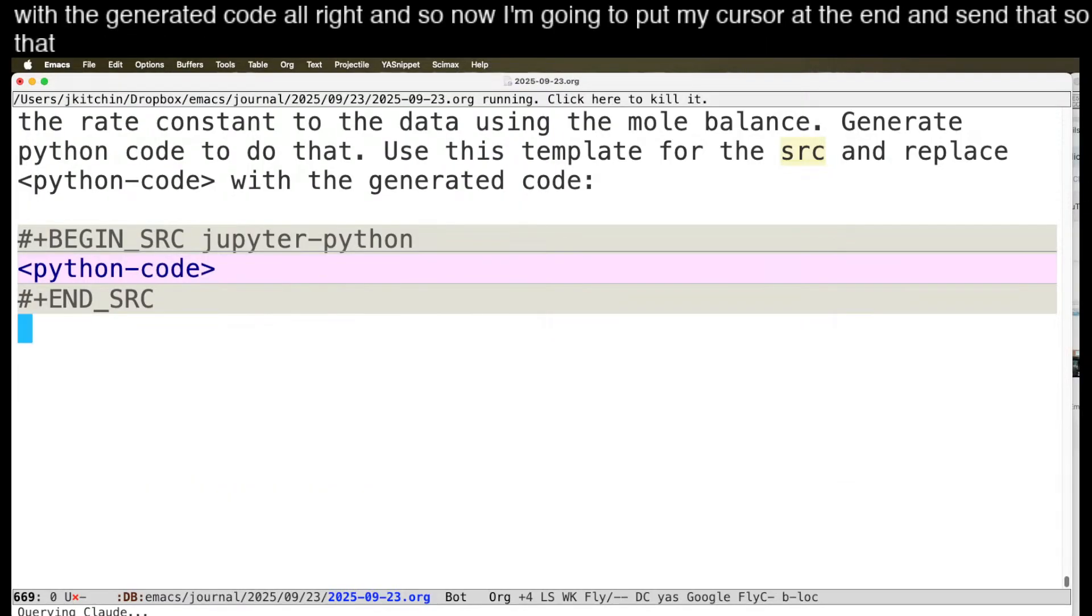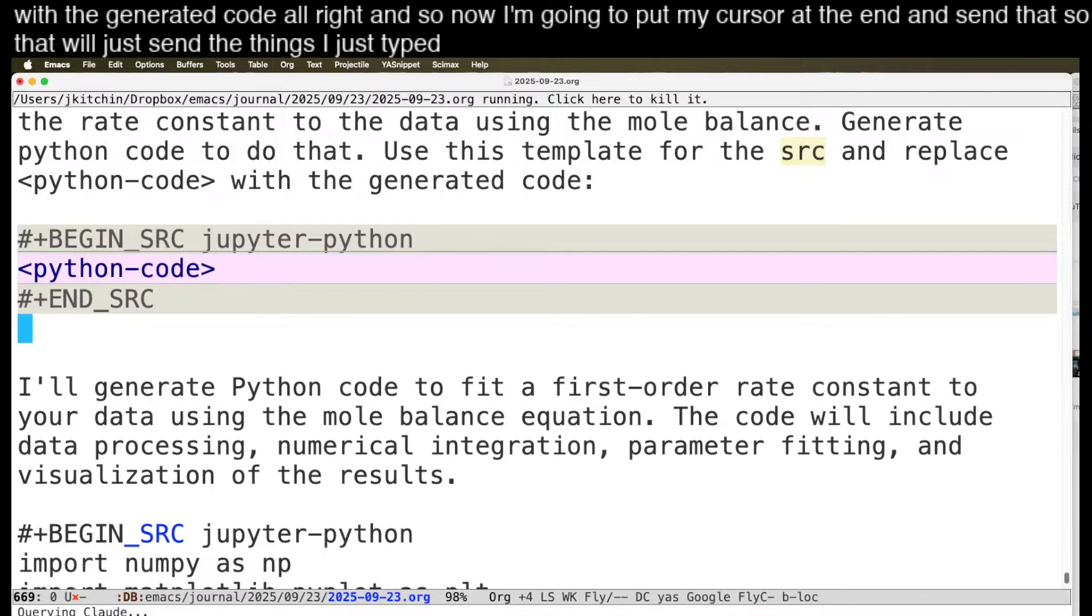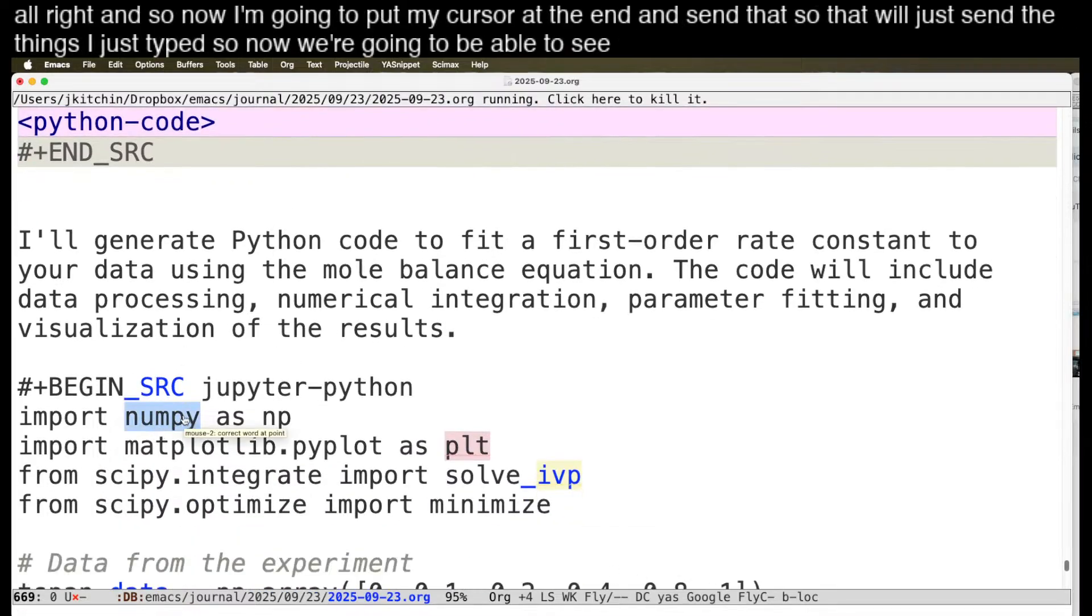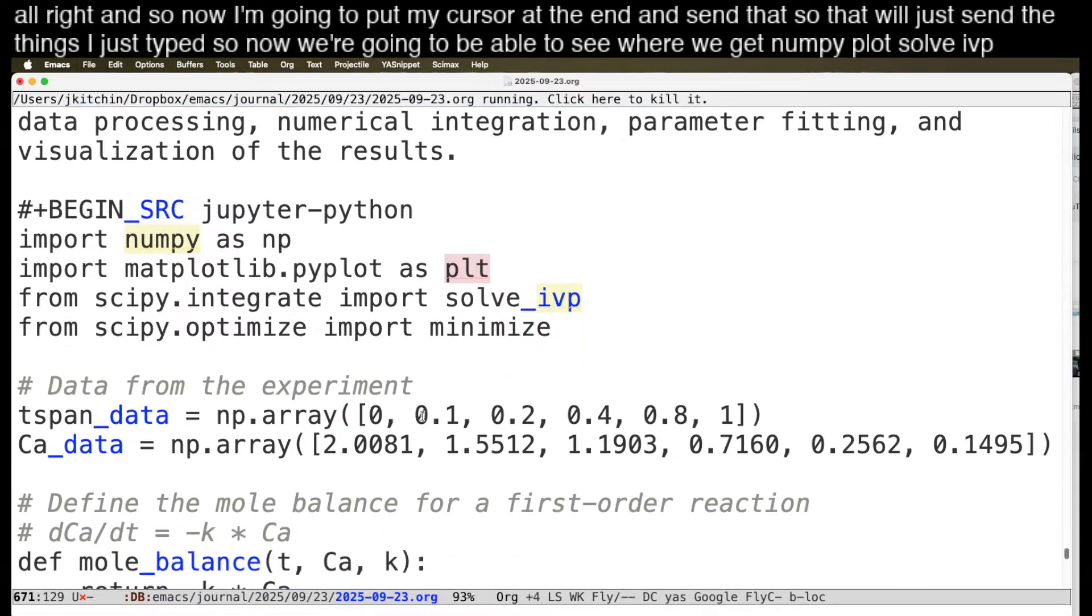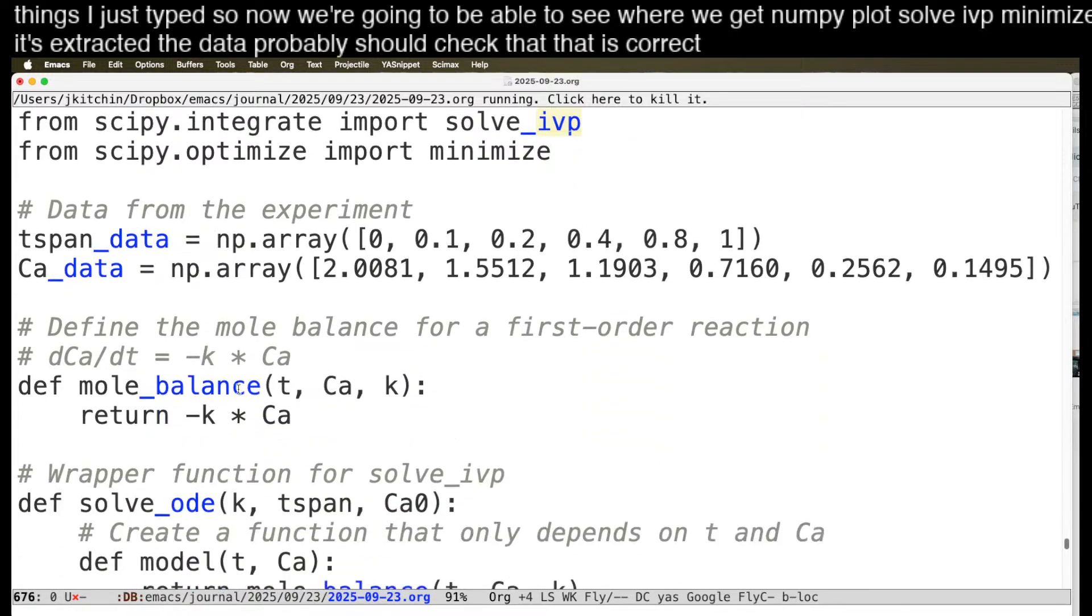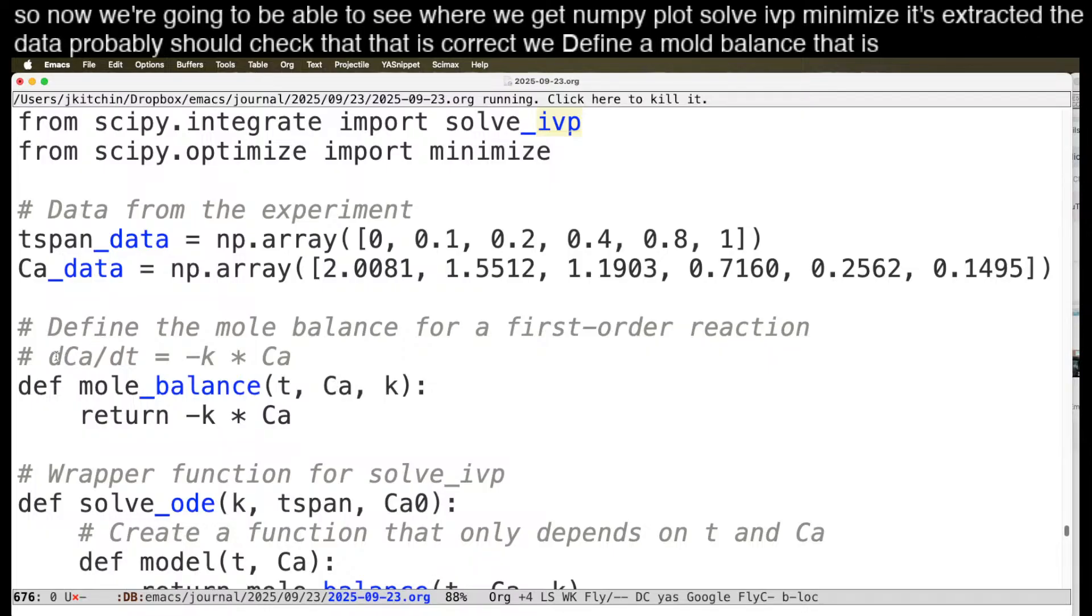So now we're going to be able to see where we get numpy plot solveivp minimize. It's extracted the data. Probably should check that that is correct. We define a mole balance that is t ca. So it even tells you what we're doing here. And we have a parameter k.